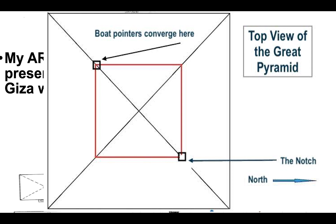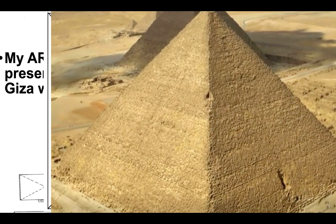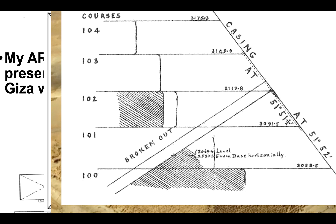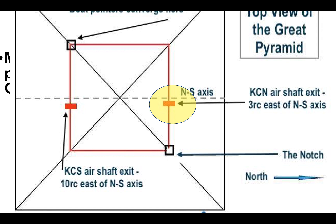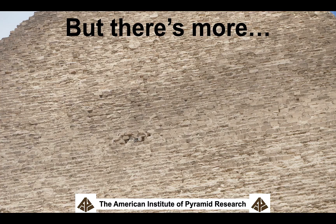This forms a square because the notch on the northeast side is a very famous and visible structure at Giza, and the boat pointers converge to form a square plainly on the Great Pyramid. The air shafts of the King's Chamber exit at the 103rd course in the original casing stones according to Petrie's diagrams. The north air shaft exits three royal cubits east of the north-south axis, but it exits on our Great Pyramid square. The south King's Chamber air shaft exits ten royal cubits east of the north-south axis — and again, on this square. Look at all the connections to this Great Pyramid square.